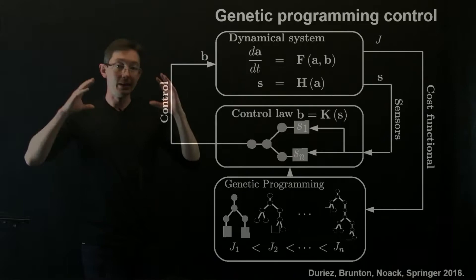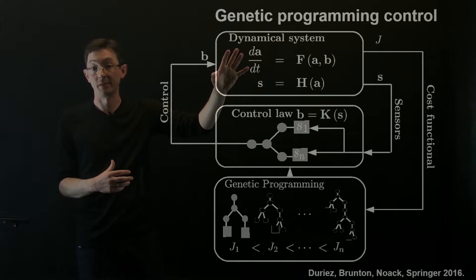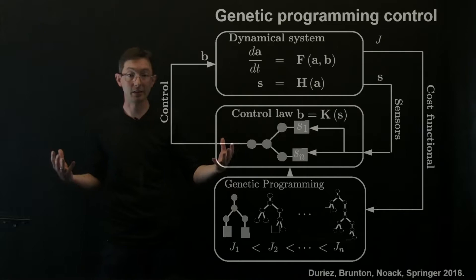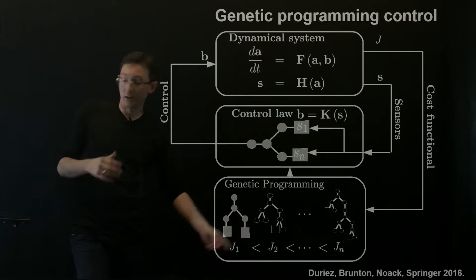And now what I'm going to tell you about is essentially how we have applied this basic architecture of this genetic programming control, in particular to control turbulent fluid dynamical systems. So this is work that was led by Bernt Nowak and his collaborators in a series of experiments across Europe, and you can read about this in a book by Thomas Duryea, myself and Bernt.